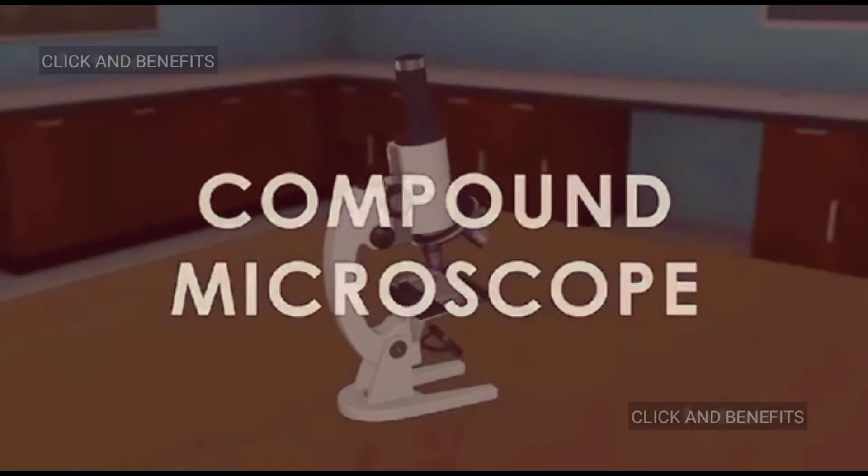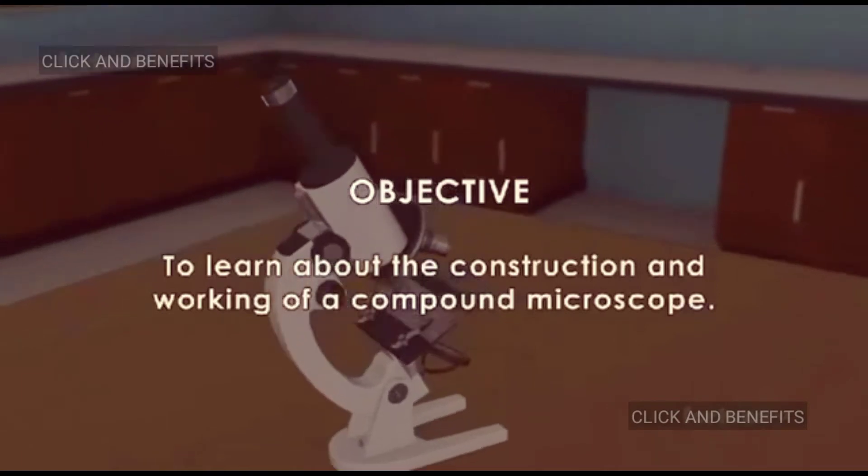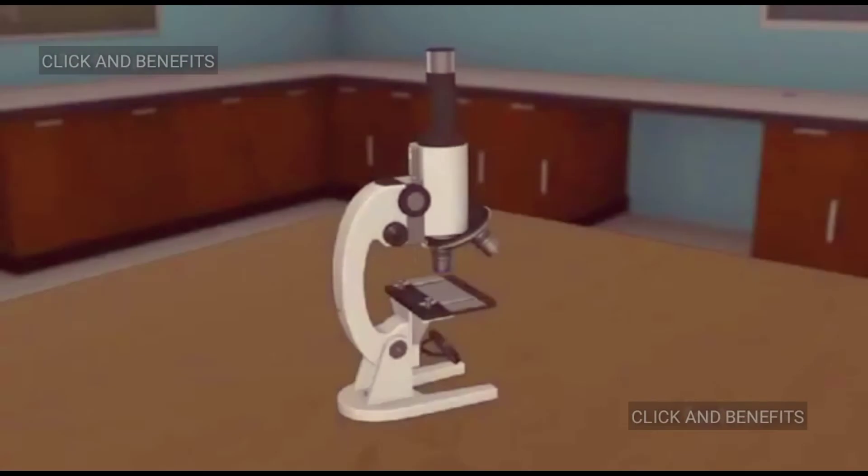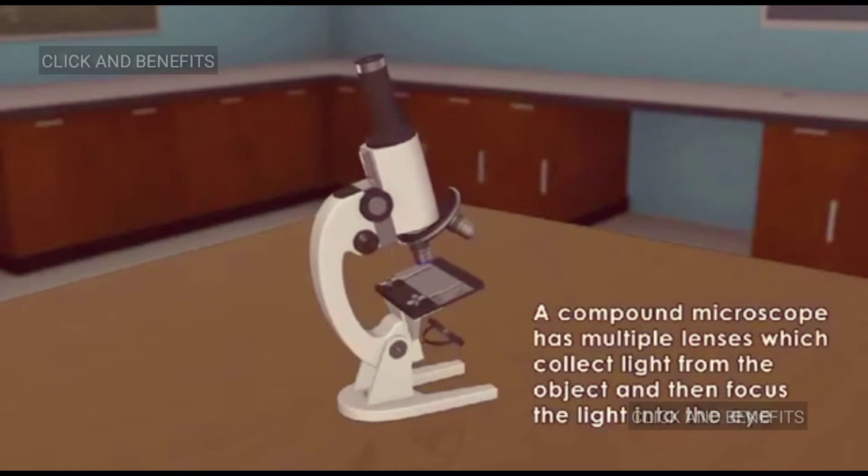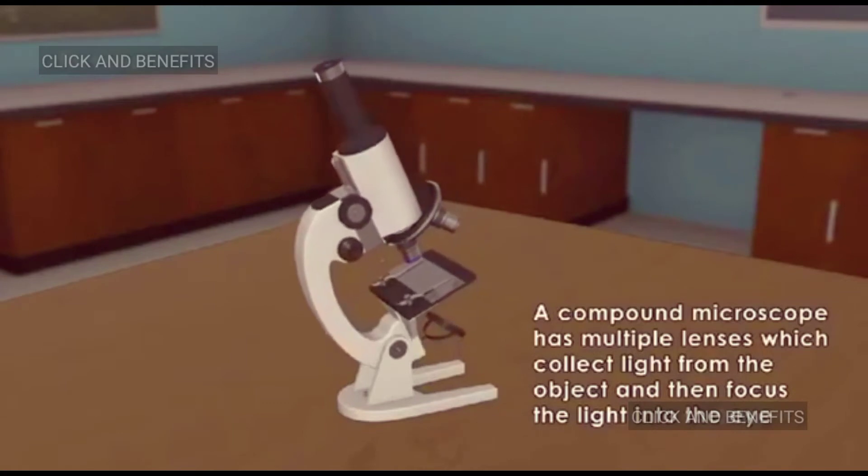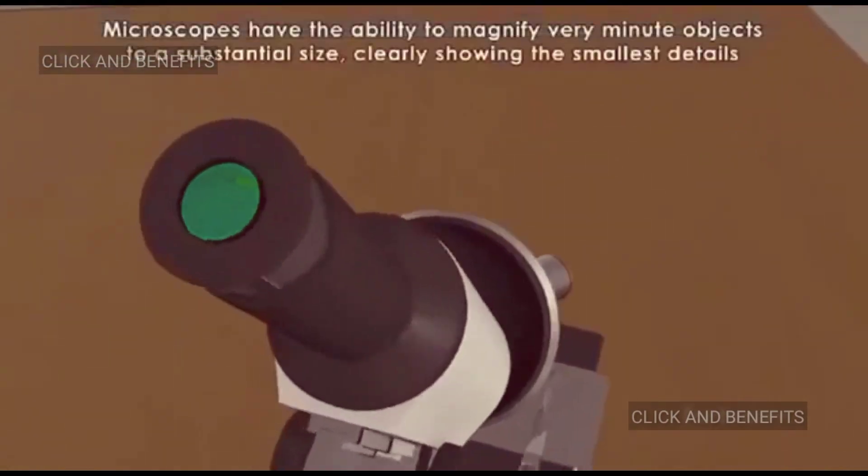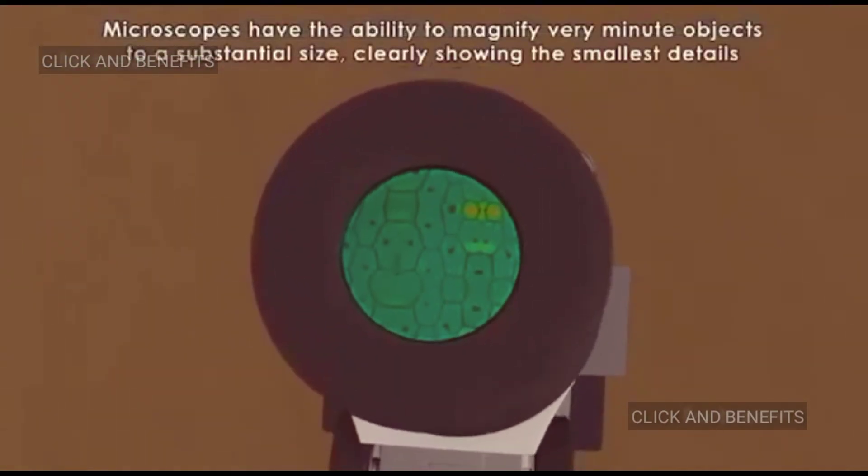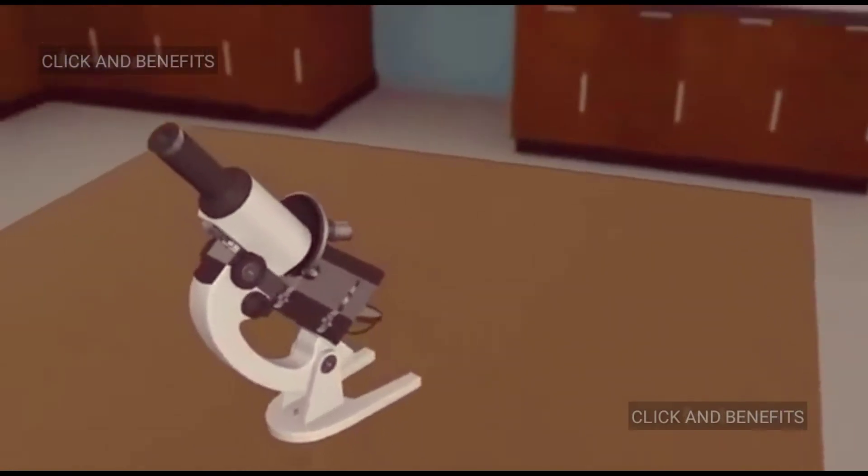Compound microscope objective: to learn about the construction and working of a compound microscope. A compound microscope has multiple lenses which collect light from the object and then focus the light into the eye. These microscopes have the ability to magnify very minute objects to a substantial size, clearly showing the smallest details.